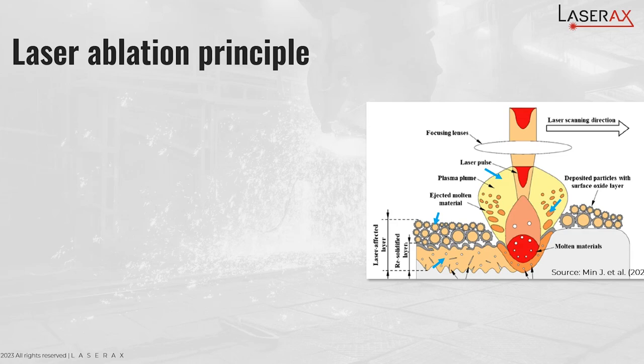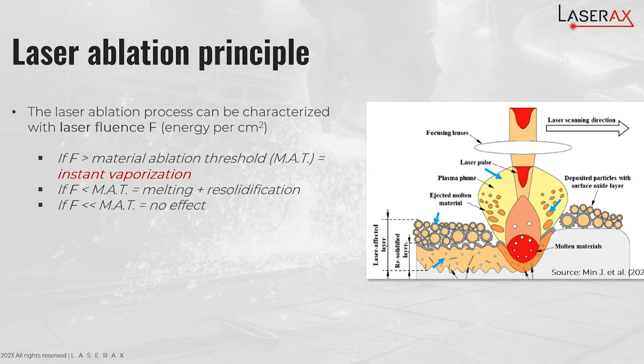For those of you who are not familiar with the laser ablation principle, I'm going to do a quick recap. Laser ablation is the phenomenon in which we describe the interaction between laser and matter, and that can be characterized using a parameter called laser fluence, which is the energy per centimeter square of the laser beam. If the fluence of your laser is higher than what we call the material ablation threshold, you will have an instant vaporization of the metal. If your fluence is slightly lower than the threshold, you will have a melting and re-solidification of the metal. And if it's way lower, there's going to be no effect.